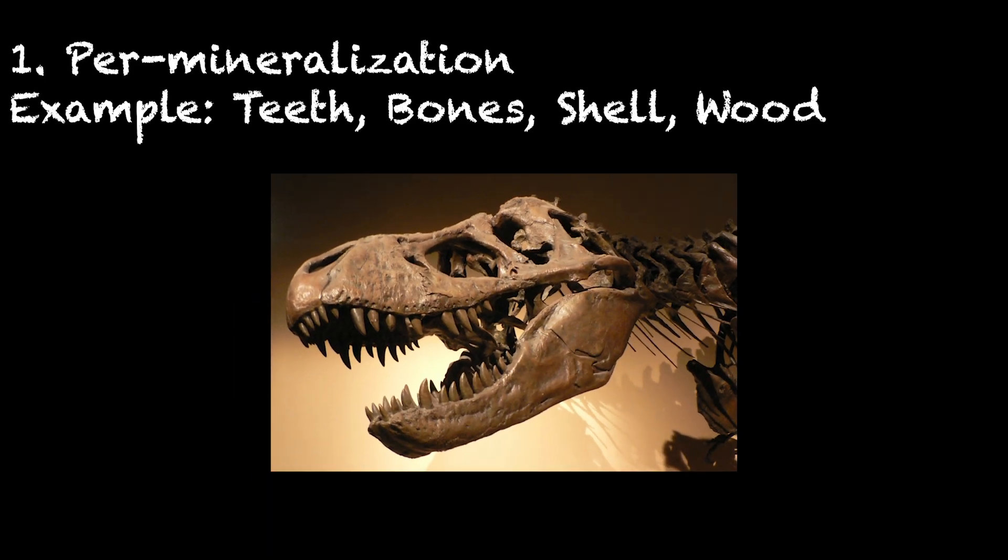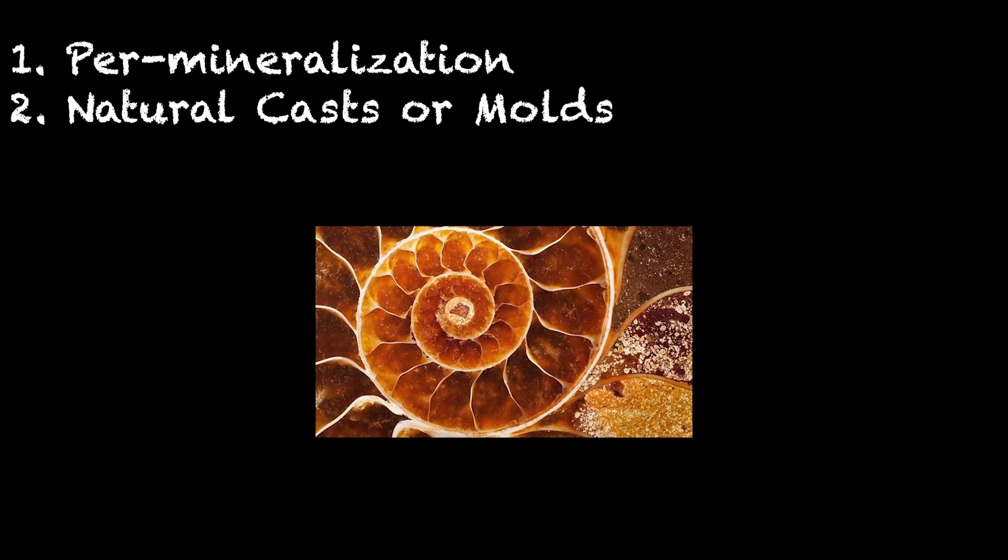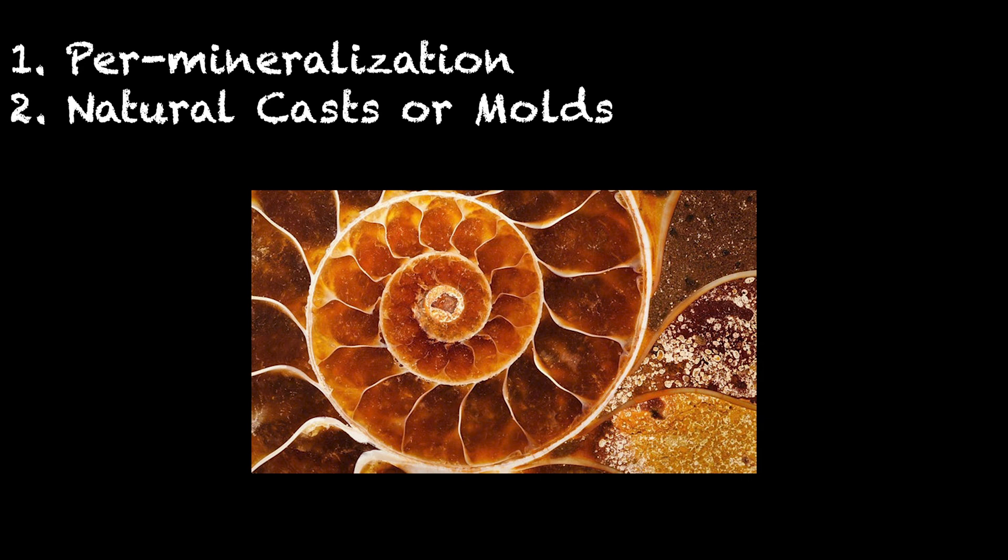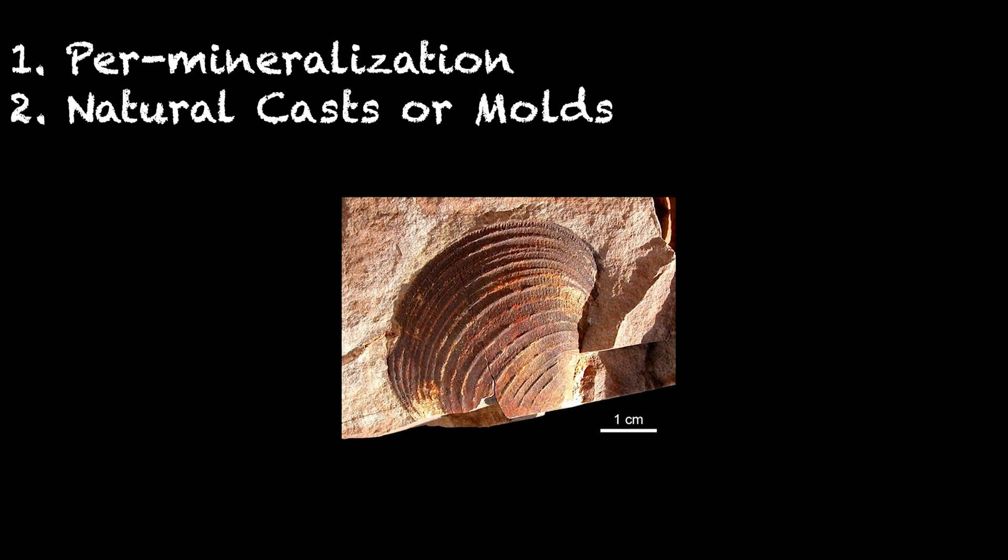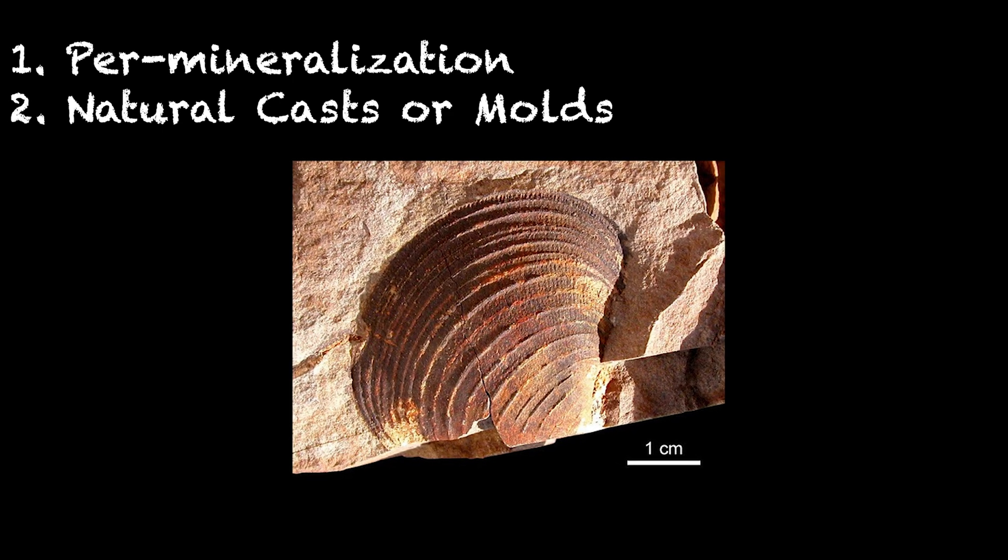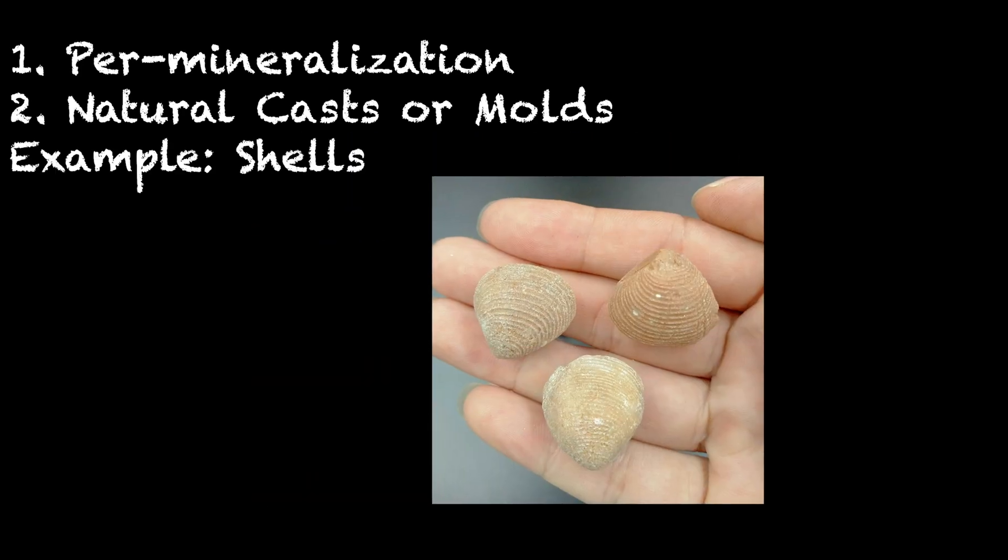The second one is natural cast. This type forms when flowing water removes all the original bone or tissue, leaving just an impression in sediment. Minerals fill the mold, recreating the original shape of the organism, for example, shells.